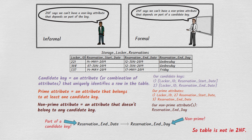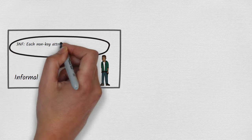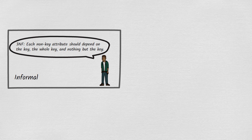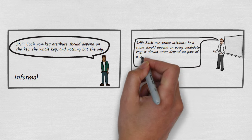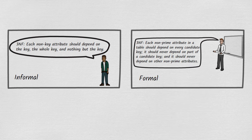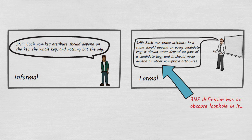The formal definition of third normal form must also be expressed in terms of candidate keys and non-prime attributes. The informal definition said each non-key attribute should depend on the key, the whole key, and nothing but the key. Formally, third normal form says each non-prime attribute in a table should depend on every candidate key, it should never depend on part of a candidate key, and it should never depend on other non-prime attributes. However, the definition of third normal form has an obscure loophole — a weakness that allows certain rare table structures to be in third normal form despite being vulnerable to the types of data anomalies third normal form was intended to prevent.